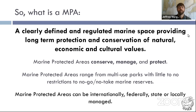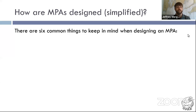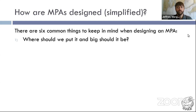An important note: marine protected areas can be managed on a local, state, federal, or international scale. So how are marine protected areas designed? There are six things we're going to start thinking about. The first is: where should we put it and how big should it be? Size does matter when we're talking about marine protected areas.